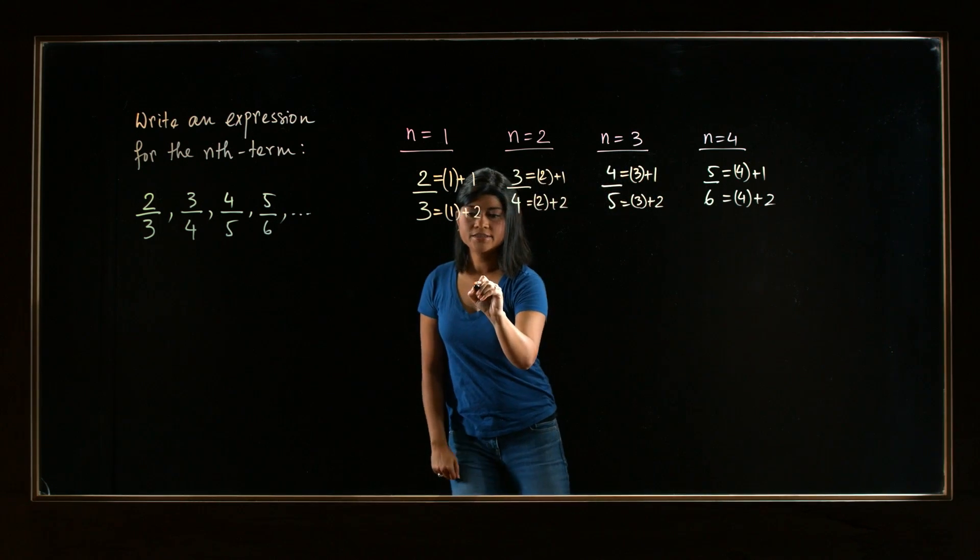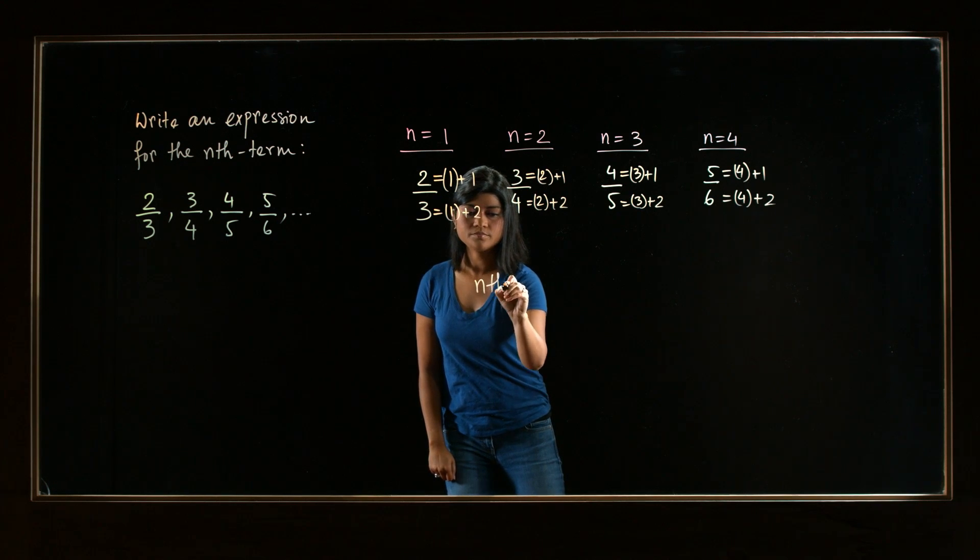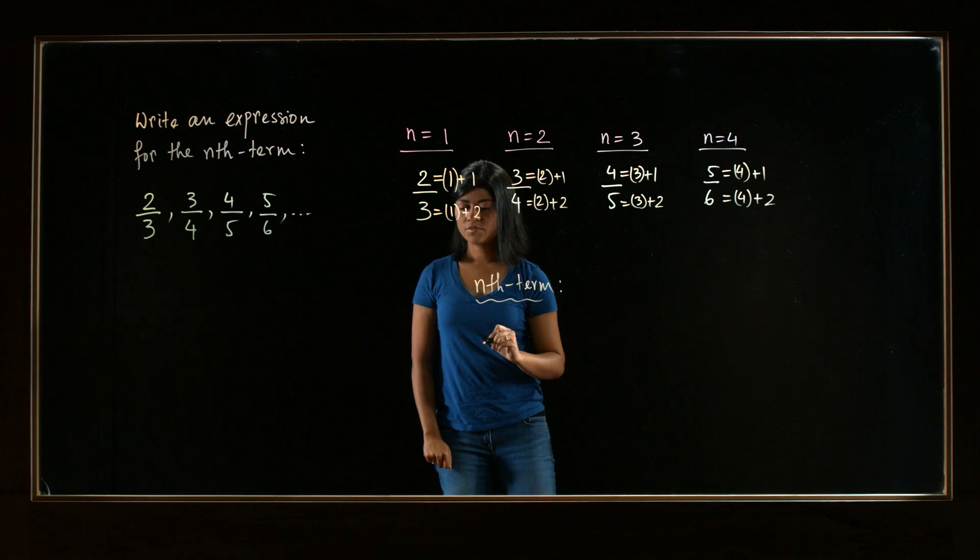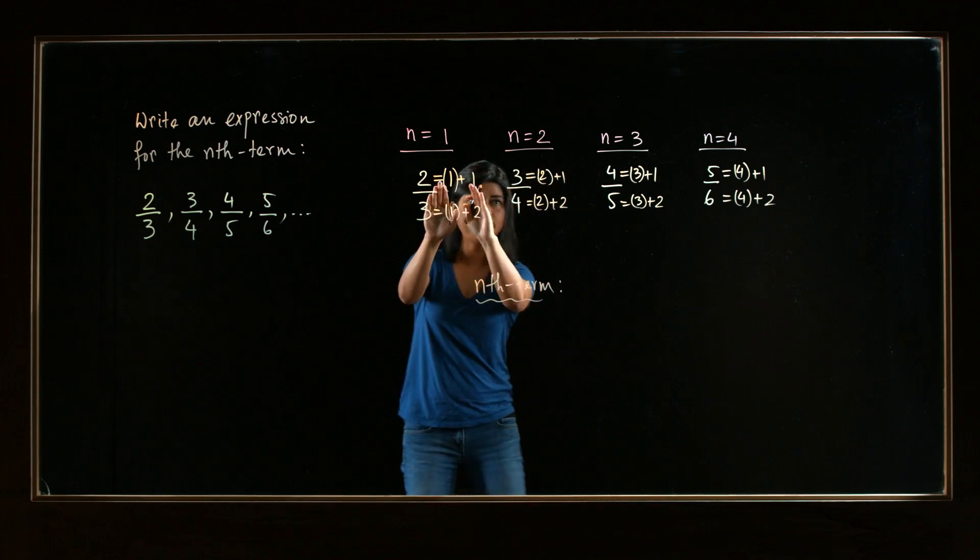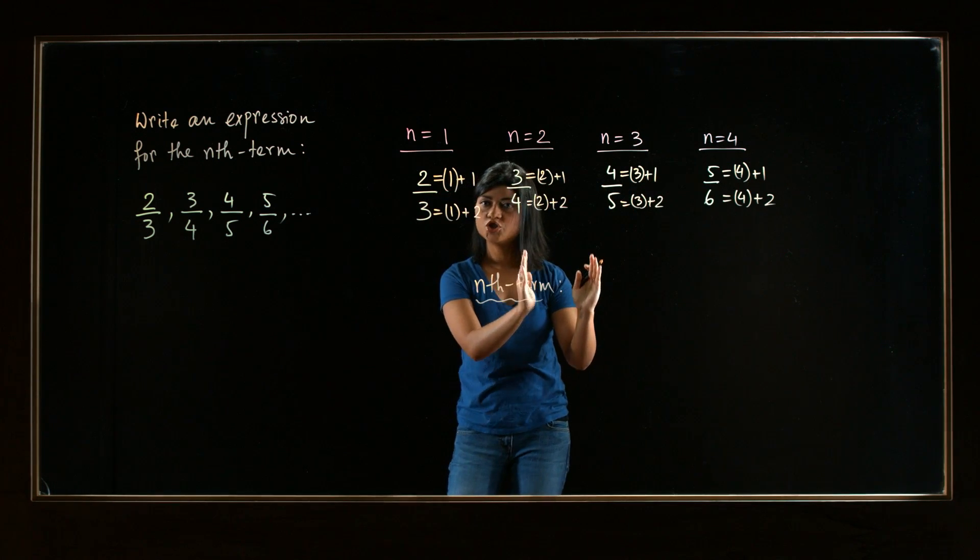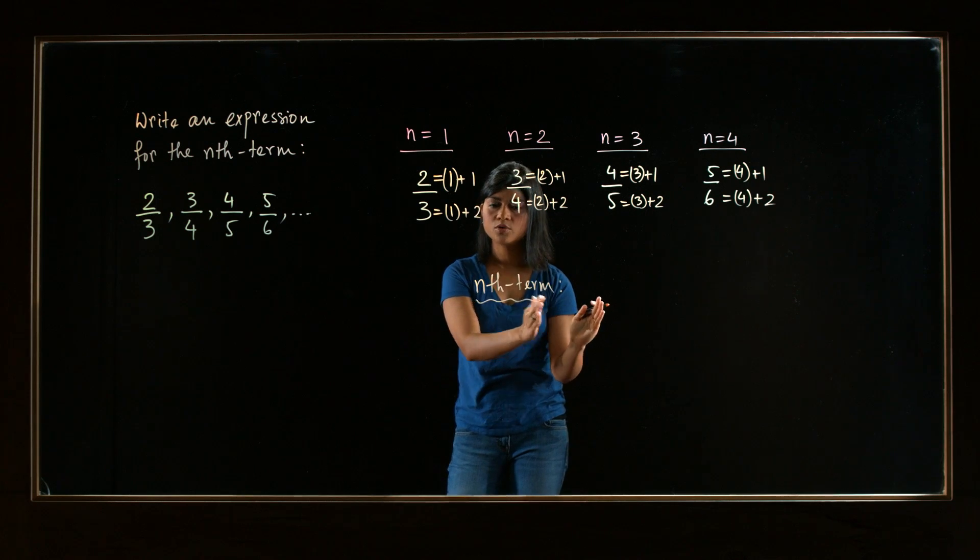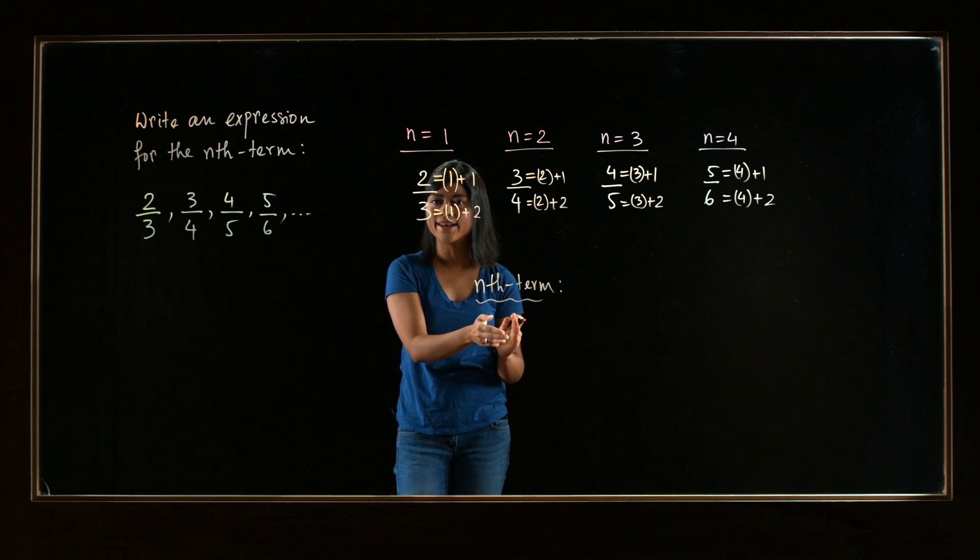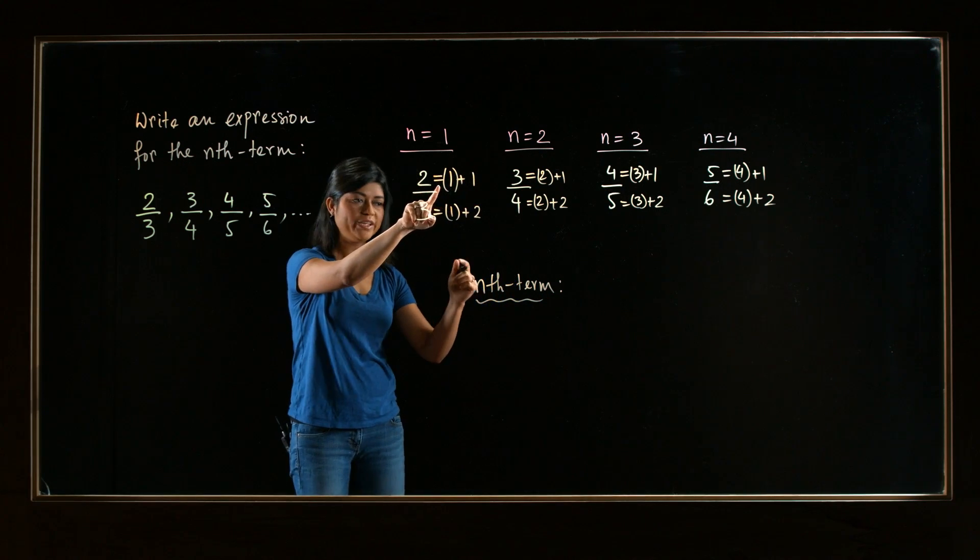So how will you write nth term? So now, look at the pattern and, in general, write a term where there is n. Not particularly n equals 1, 2, 3, 4, but just n. And we see what it will be. It's going to be a fraction.